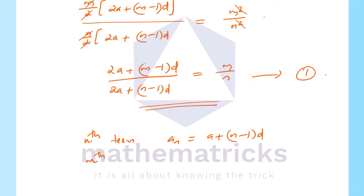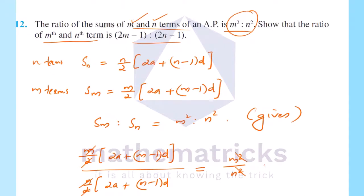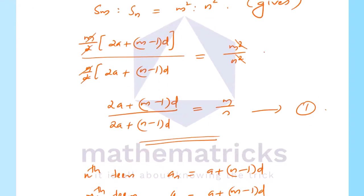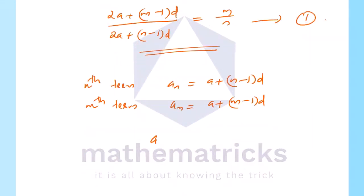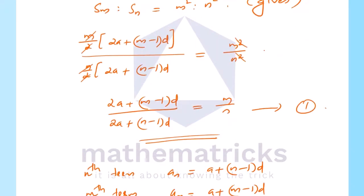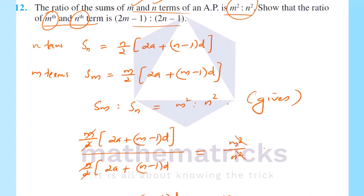The mth term am is equal to a plus m minus 1 into d. Now, am to an equals 2m minus 1 to 2n minus 1.